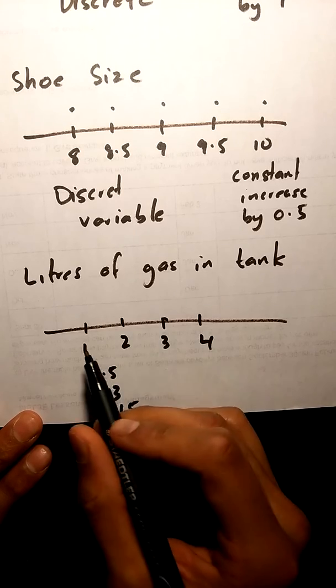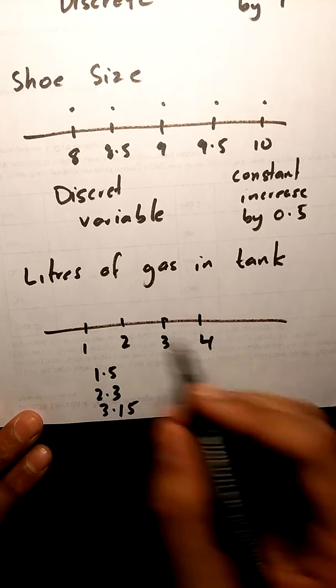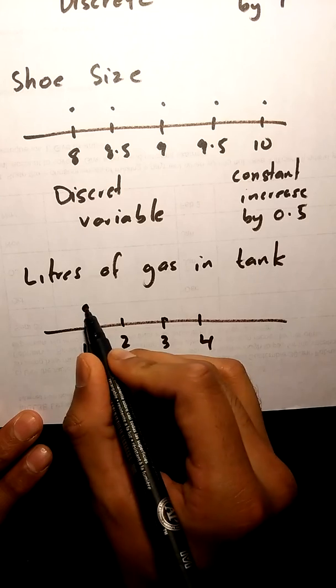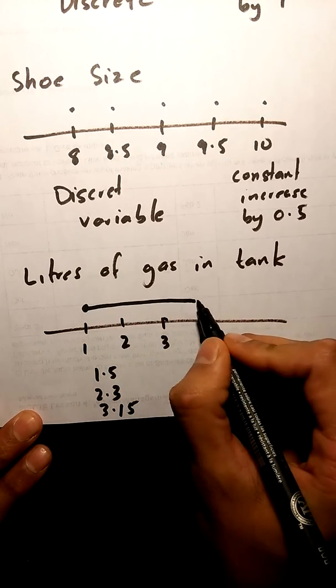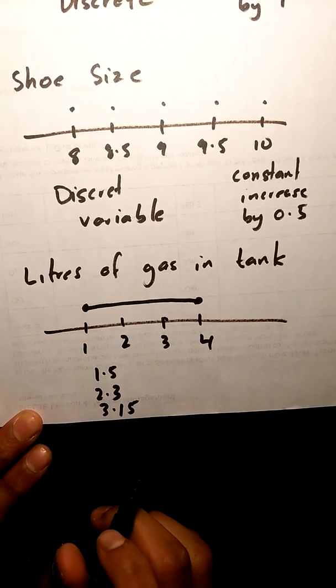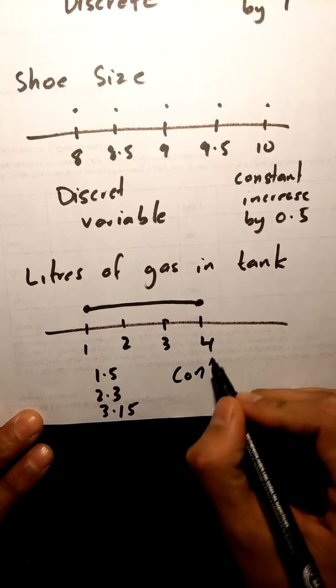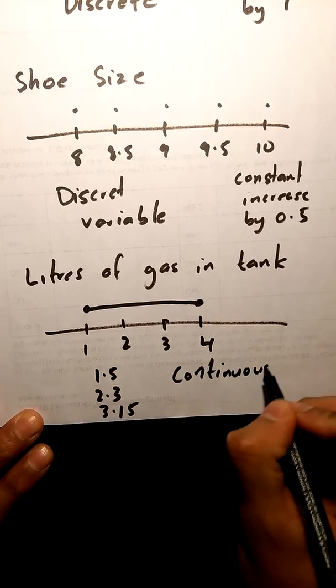Basically, if your tank is going from 1 liter to 4 liters, it's going to take every single value in between before it reaches that final value, making it again a continuous variable.